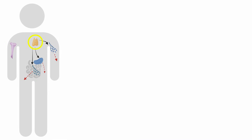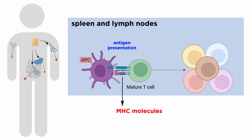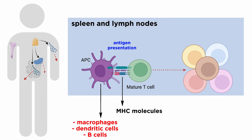Next, naive mature T cells exit the thymus and enter the peripheral lymphoid organs, such as the spleen and lymph nodes. Here, they get exposed to foreign peptides that are presented by the MHC molecules of antigen-presenting cells, or APCs, such as macrophages, dendritic cells, and B cells, during an immune challenge or an infection.